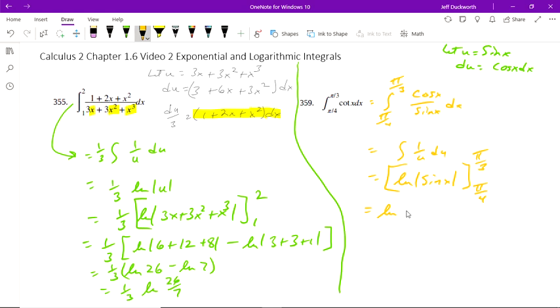So the natural log of sine of pi by 4 minus the natural log of sine... Well, this one's pi by 4, the other one's pi by 3, excuse me. It's a bigger number. That means the natural log... So sine of pi by 3 is root 3 over 2, and pi by 4 is root 2 over 2.